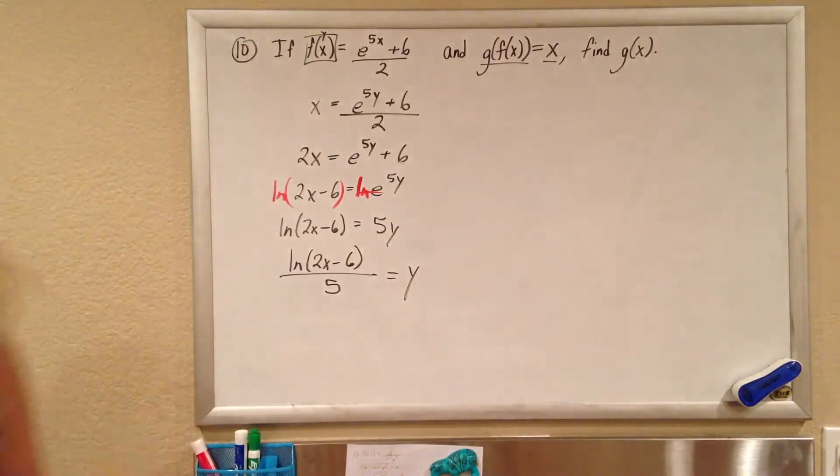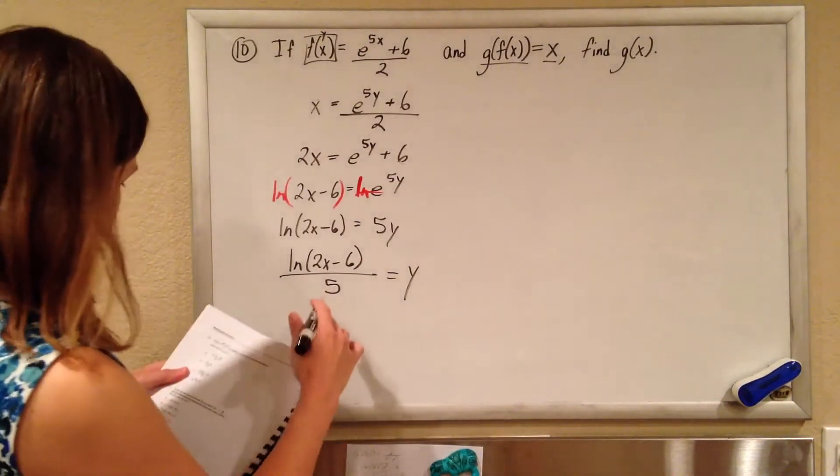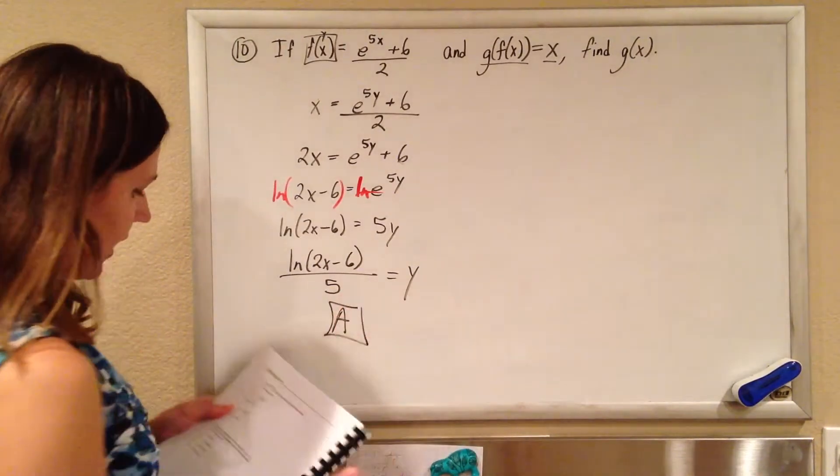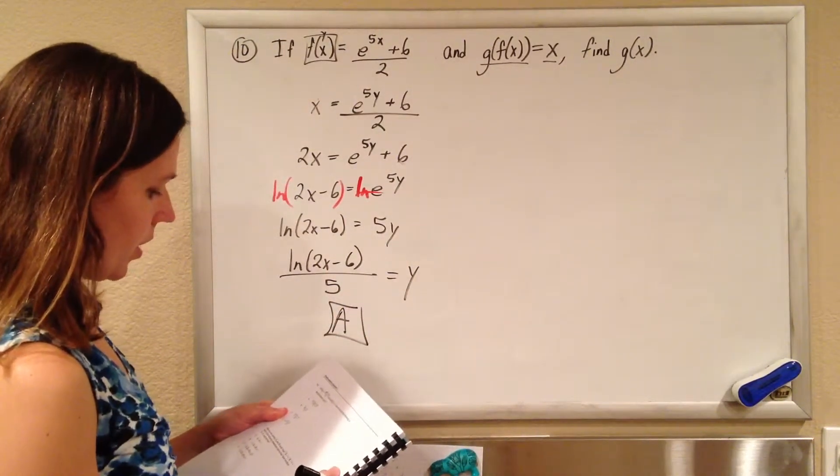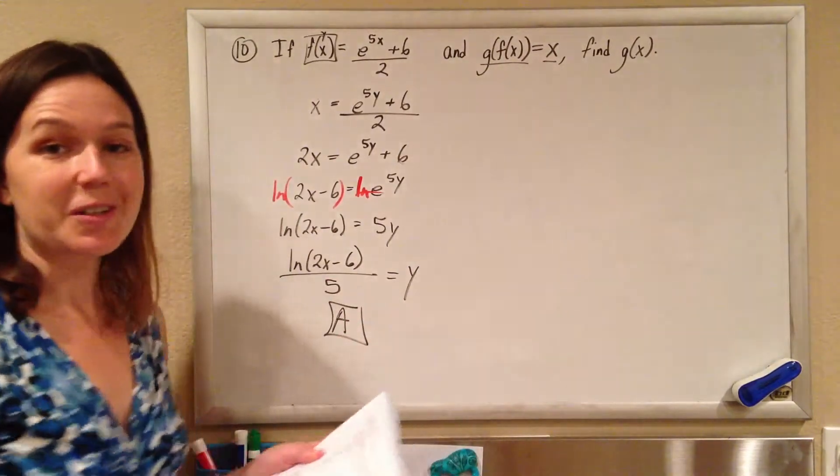And that's one of our answers, let me go find it. It is ln of 2x minus 6 divided by 5, looks like it's a. They all look kind of similar to each other, but this is the only one that's exact, and that'll do it.